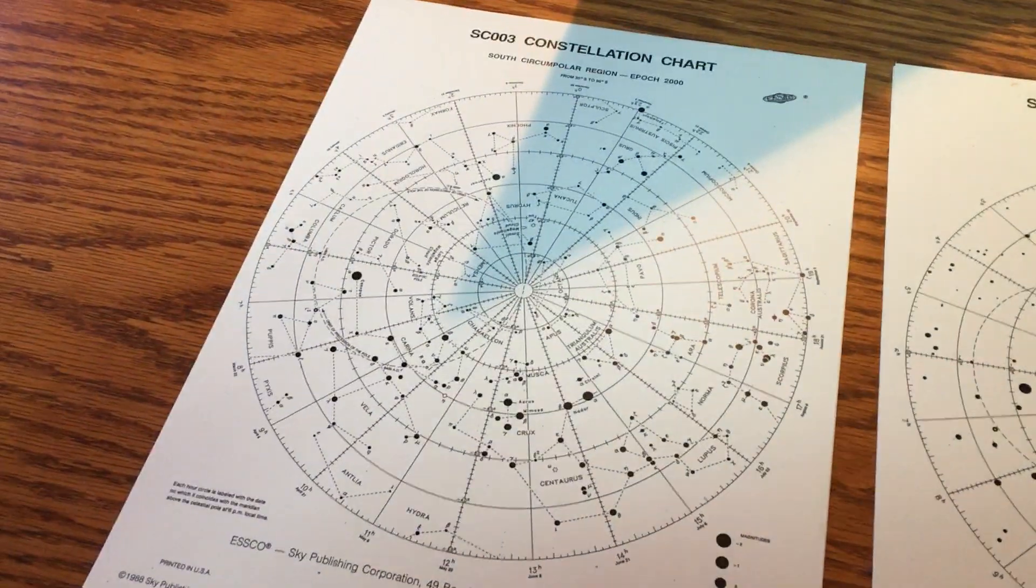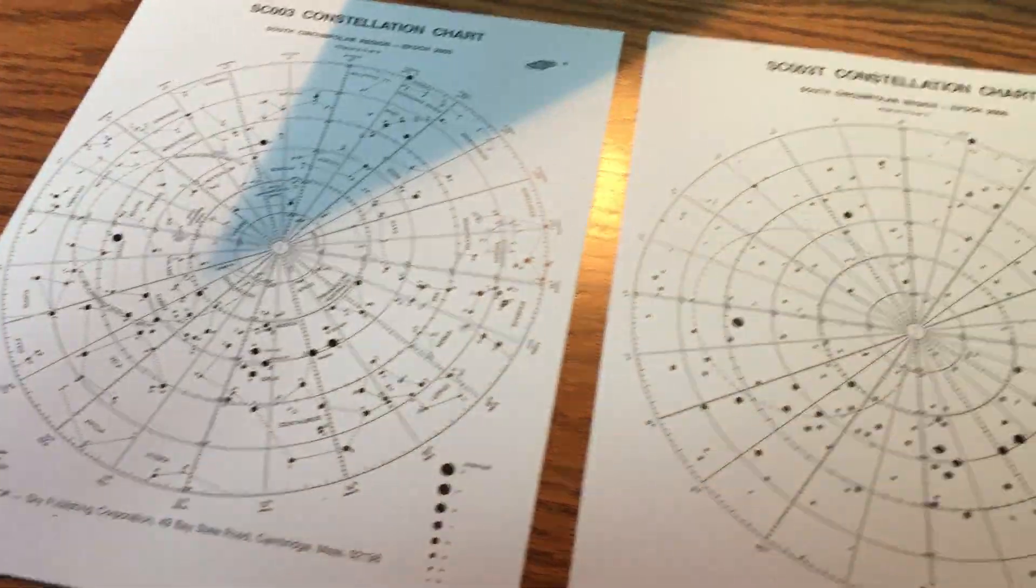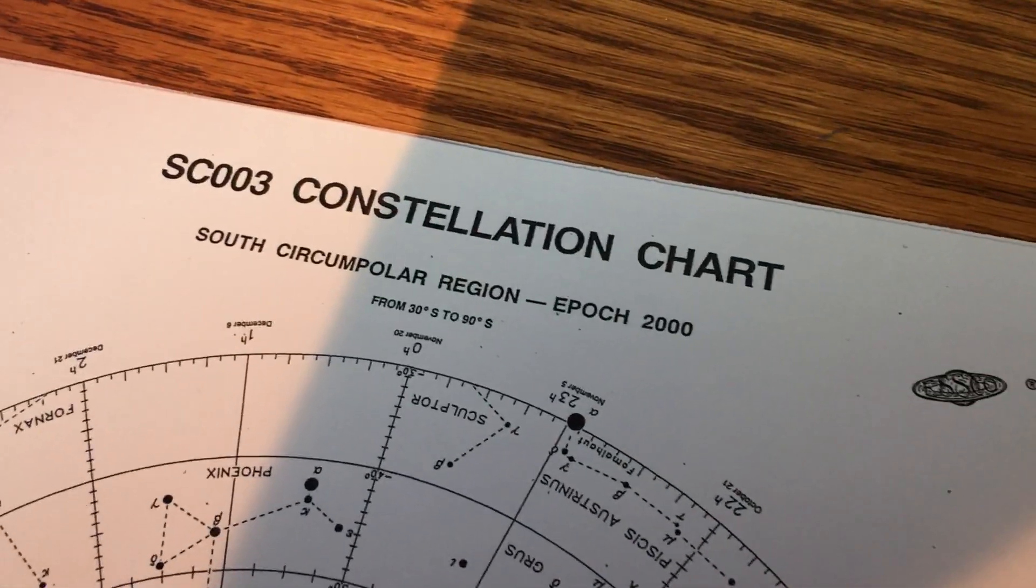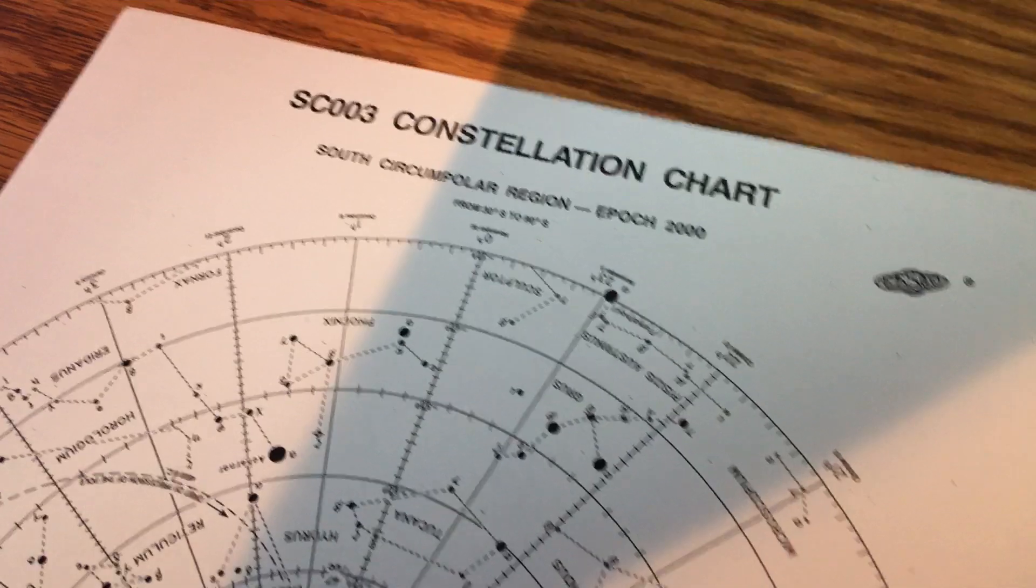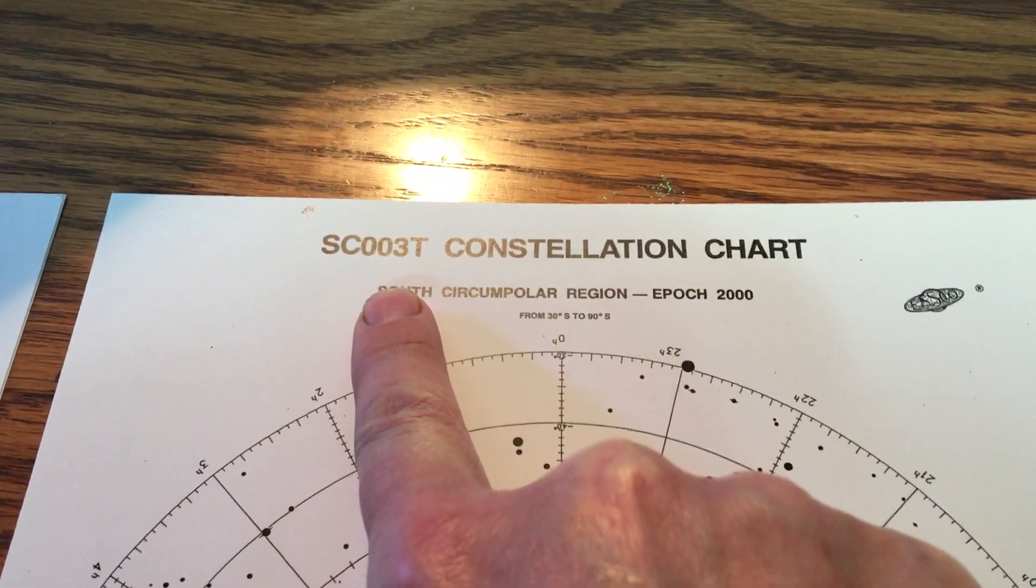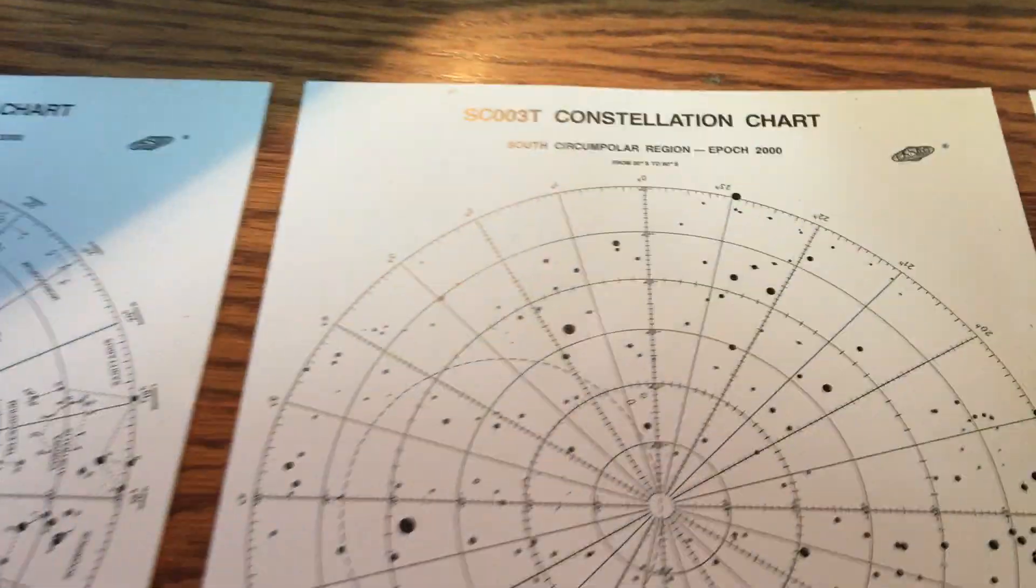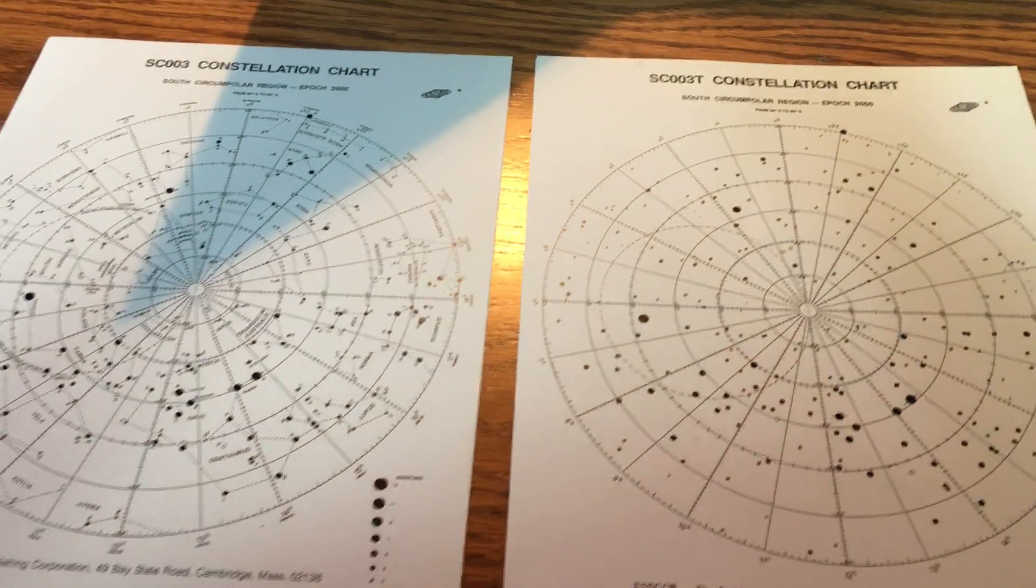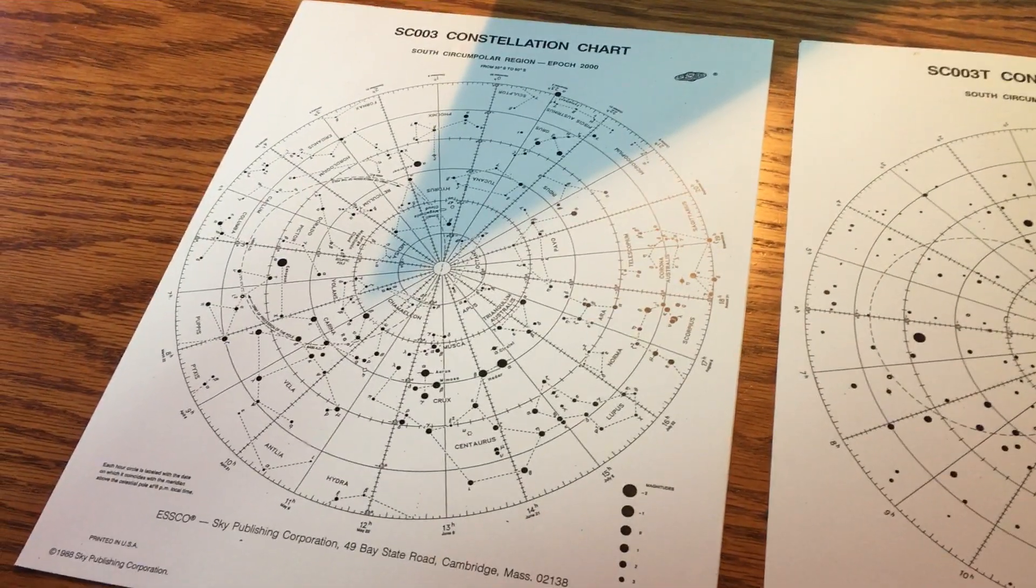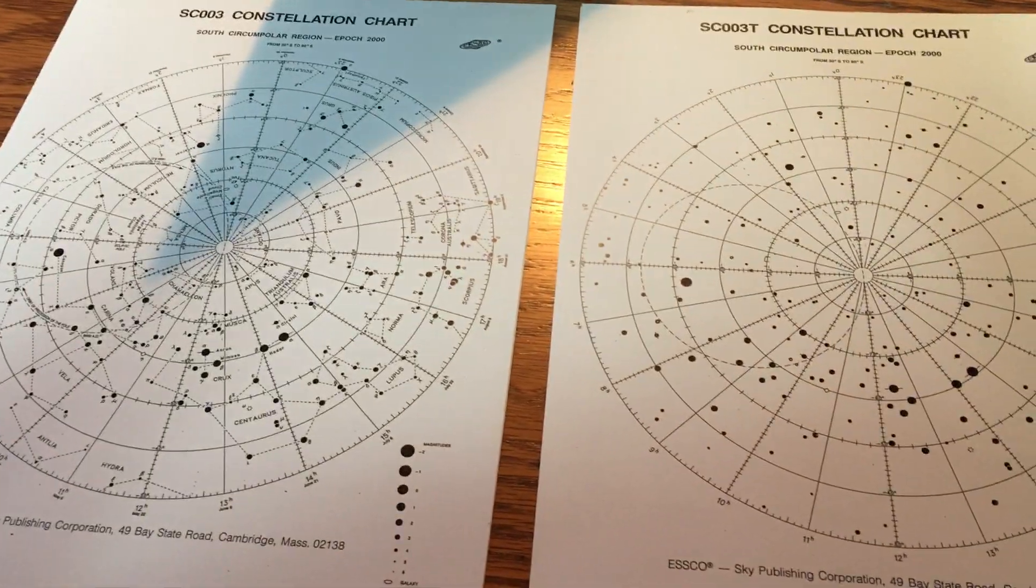Today we're talking about a sky that is rarely seen, at least here from Altoona, Pennsylvania. This, everybody, is going to be our south circumpolar sky. And it's going to be on the rarely seen SC003 and SC003T charts. So we weren't in school to get these, so I've posted PDFs on Google Classroom. You can print both of them out at home.